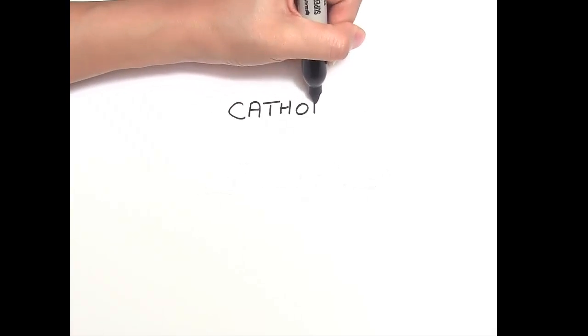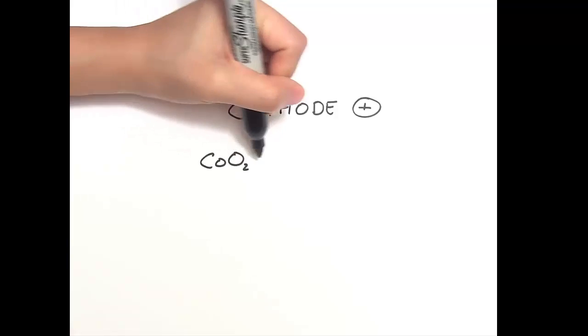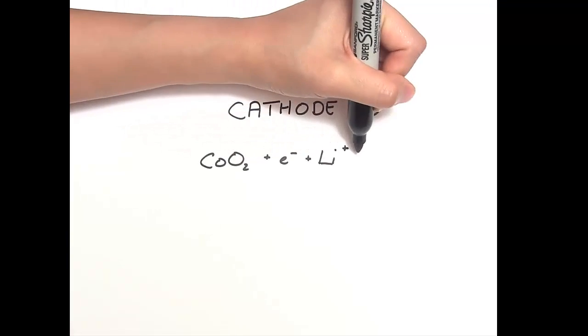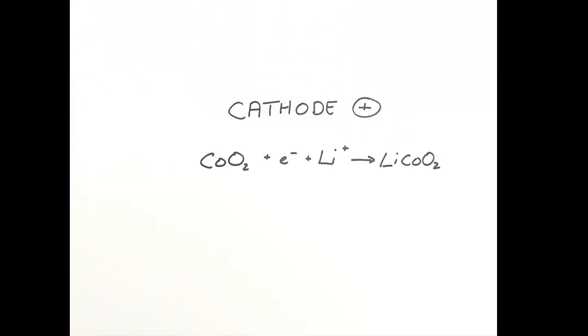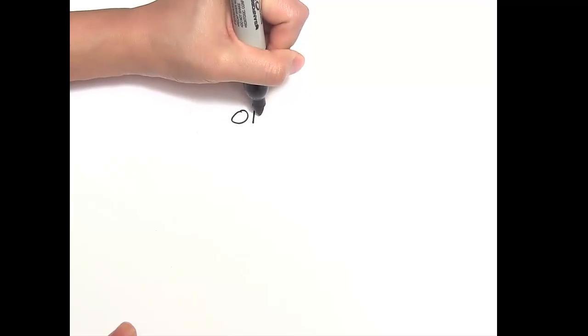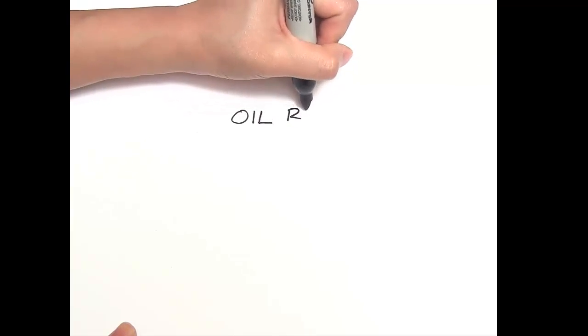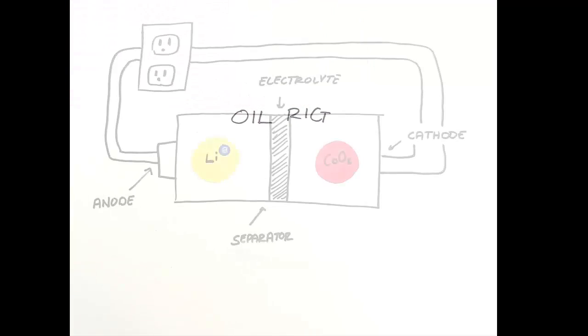And at the cathode, or the positive end, we have cobalt oxide that gains an electron and lithium ion to form lithium cobalt oxide. This is a reduction reaction. Remember, oxidation is loss and reduction is gain. And together, that makes OIL RIG.